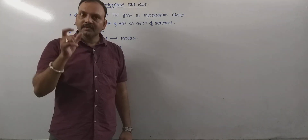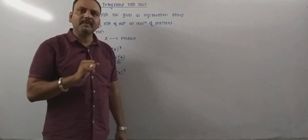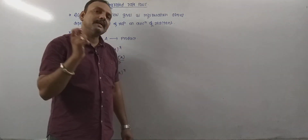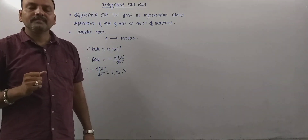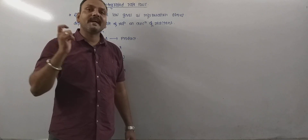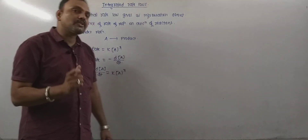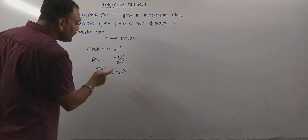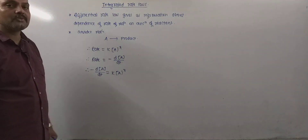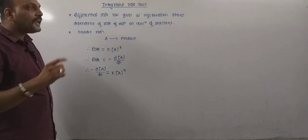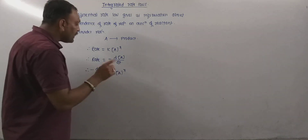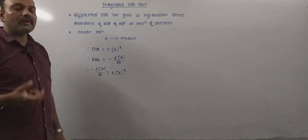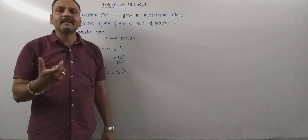In order to give the relationship between the concentration of reactant and time, and in order to calculate the rate and rate constant, we need to integrate these differential rate laws. By integrating the differential rate laws, one can get the integrated rate laws.